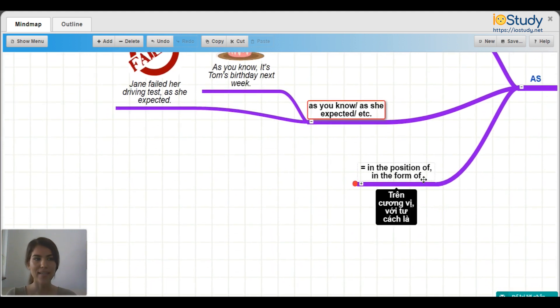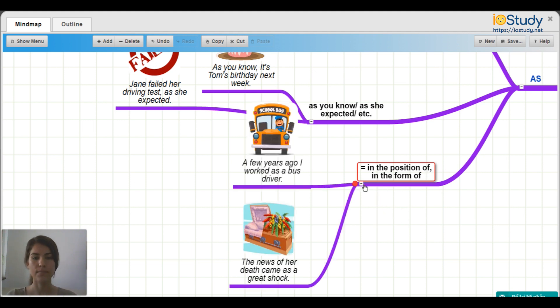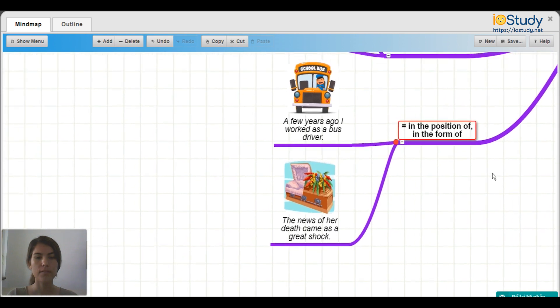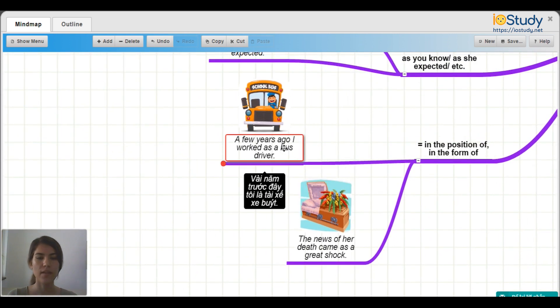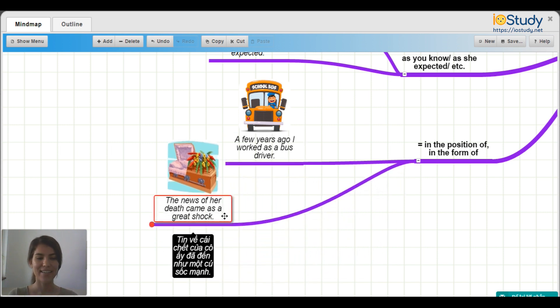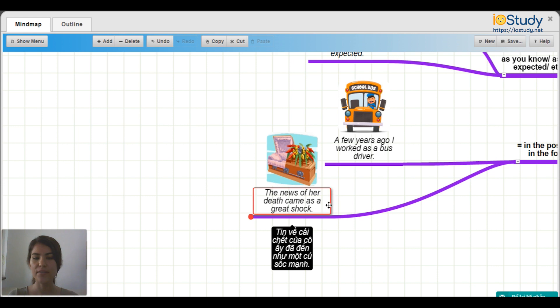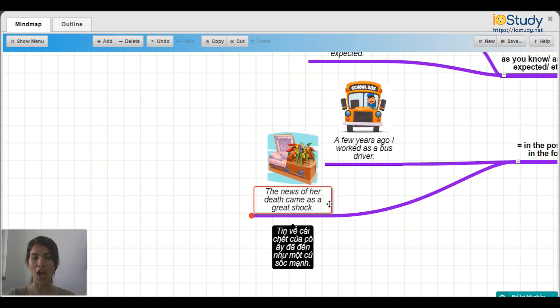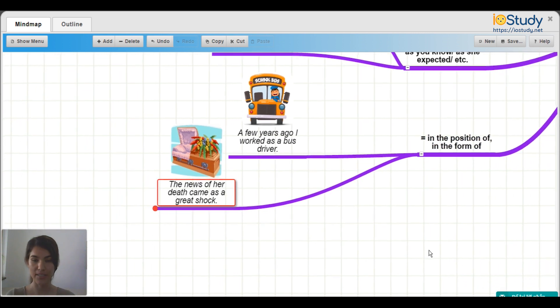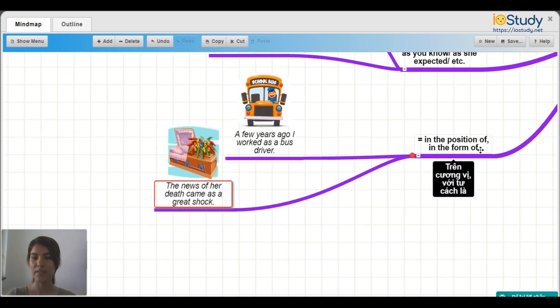Next, we can use as to mean the same thing as in the position of, and in the form of. So for example, a few years ago, I worked as a bus driver. And the news of her death came as a great shock. So in both of these, we are using as to mean in the position of, in the form of.